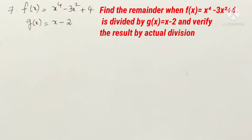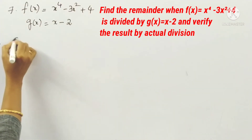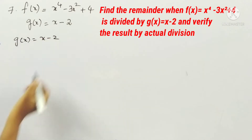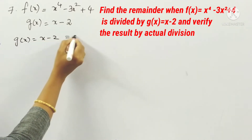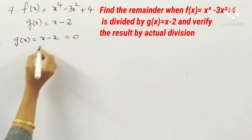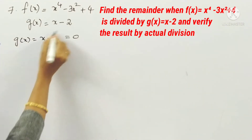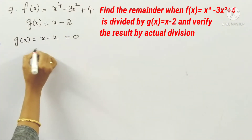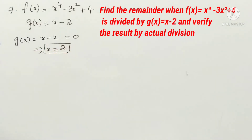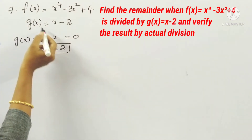We have to find the remainder using the Remainder Theorem, and then also do the actual division. First, g(x) = x minus 2. We equalize it to 0 to find the zero of this polynomial. Transposing gives x = 2.